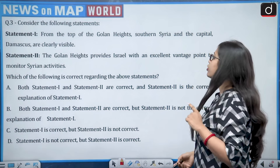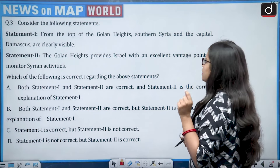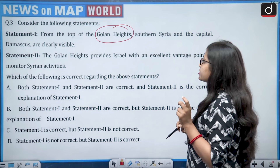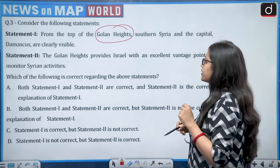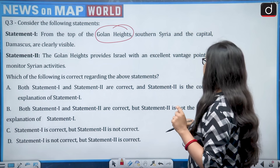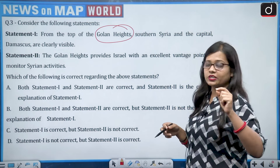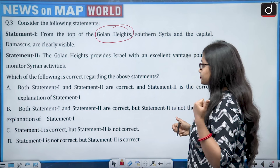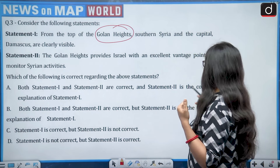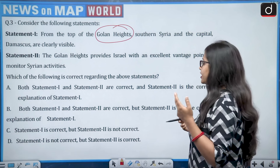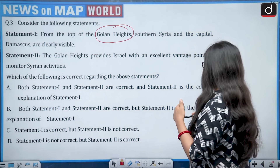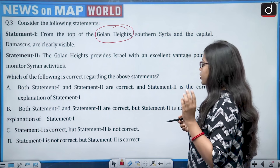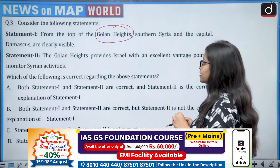Next question: consider the following statements. Statement one — from the top of the Golan Heights, southern Syria and the capital Damascus are clearly visible. Statement two — the Golan Heights provides Israel with an excellent vantage point to monitor Syrian activities. Which is correct: both correct and two explains one, both correct but two does not explain one, only one correct, or only two correct?